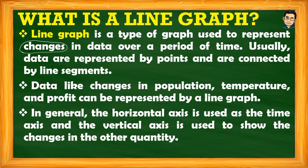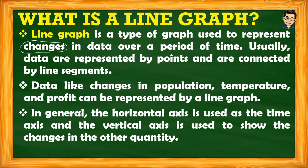In general, the horizontal axis is used as the time axis, and the vertical axis is used to show the changes in the other quantity. For example, if showing population, the horizontal axis may show years like 2010, 2011, 2012, 2013. For temperature, it may be per hour — 7 o'clock, 8 o'clock, 9 o'clock. For profit, it may be by month — January, February, March, April. The vertical axis shows the changes in the other quantity.